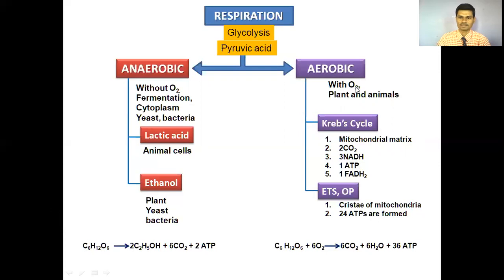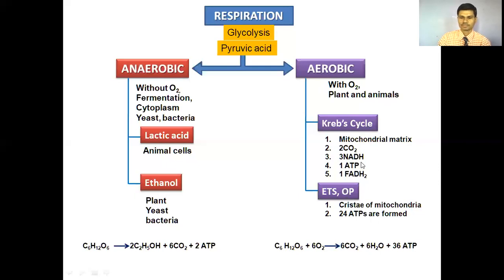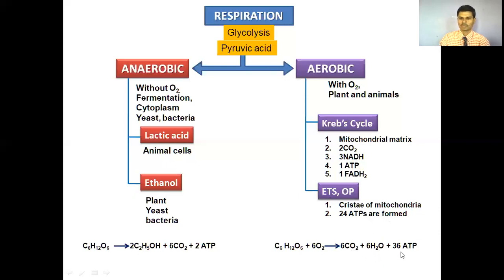Aerobic respiration takes place with the help of oxygen, in both plants and animals. There are three steps: first, glycolysis; then the Krebs cycle; and ETS, that is the electron transport system or oxidative phosphorylation. The Krebs cycle occurs in the mitochondrial matrix, but glycolysis takes place in the cytoplasm of the cell. Two CO2 molecules are removed, three NADH are formed, one ATP and one FADH2 are formed per turn. The electron transport system takes place in the cristae of mitochondria and here 34 ATPs are formed. The overall equation of aerobic respiration shows that CO2 and water molecules are formed along with 36 ATP molecules.